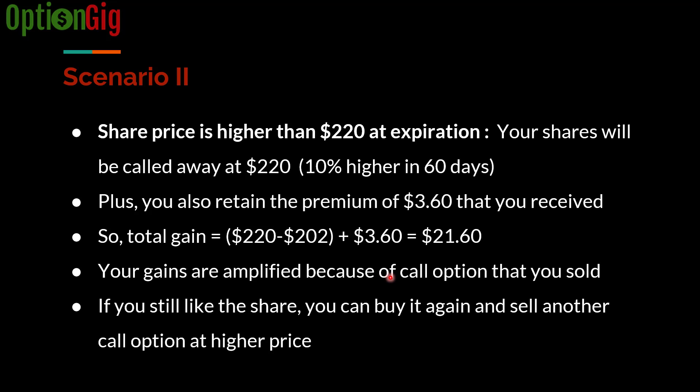A common question is: what if I still like the shares and didn't want to sell them? The answer is: when selling a covered call, pick a strike price at which you are comfortable and okay to sell. Don't have seller's remorse after the fact. If your shares do get called away and you're still interested in that stock, you can simply buy them again and then sell another covered call at a higher price.